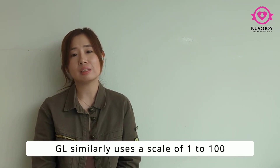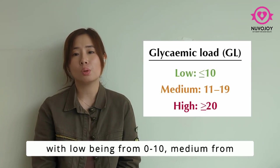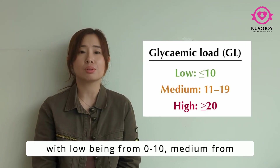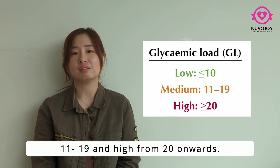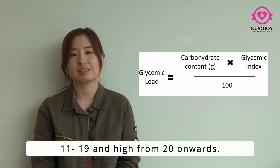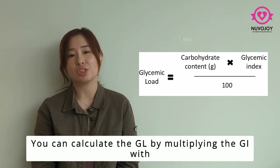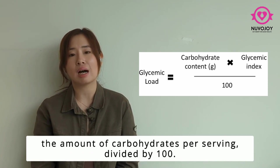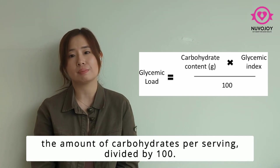GL similarly uses a scale of 1 to 100, with low being from 0 to 10, medium from 11 to 19, and high from 20 onwards. You can calculate the GL by multiplying the GI with the amount of carbohydrates per serving, divided by 100.